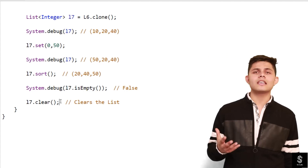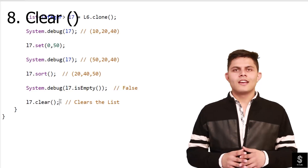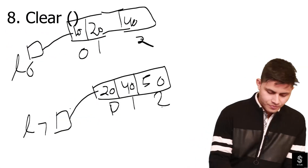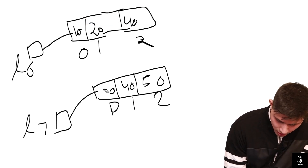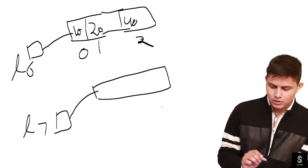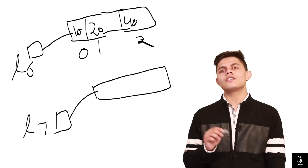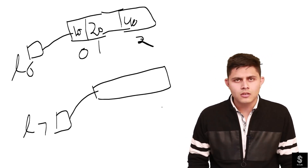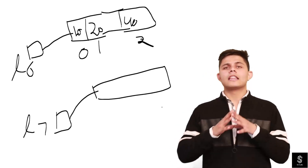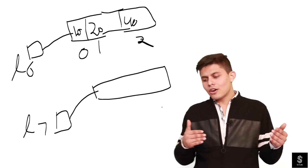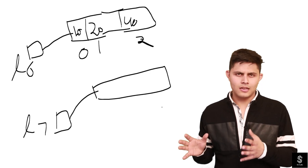After that we have the clear() method, which removes all the elements from a list. If we call l7.clear(), it's going to remove all the elements, leaving a list with no values. Now if we call l7.isEmpty(), it's going to return true because there are no elements in the l7 list. These are all the methods you should know about when it comes to the List class or List collection.